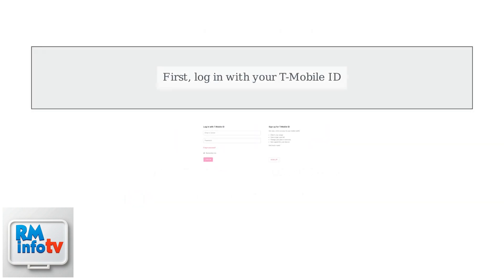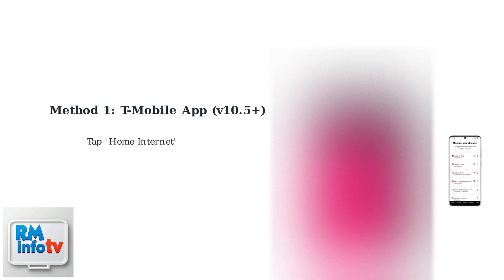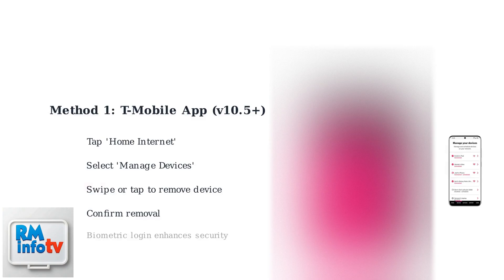T-Mobile offers two convenient methods for device removal. First, use the T-Mobile app version 10.5 or later. Log in with your T-Mobile ID — biometric enhancements make this seamless. Tap Home Internet, select Manage Devices, swipe or tap to remove, and confirm.